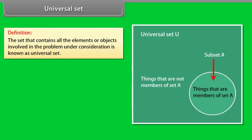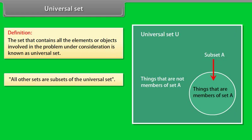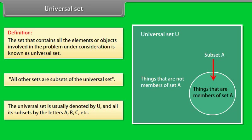Universal set. Definition: The set that contains all the elements or objects involved in the problem under consideration is known as universal set. All other sets are subsets of the universal set. The universal set is usually denoted by U and all its subsets by the letters A, B, C, etc.